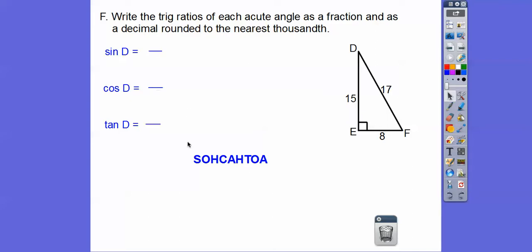The sine is opposite over hypotenuse. So here's D, opposite over hypotenuse, 8 17ths. Cosine is adjacent over hypotenuse, 15 17ths. Tangent is opposite over adjacent. Here's D, so tangent is 8 over 15. Then you can get the decimals of those.